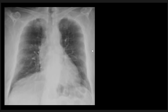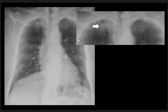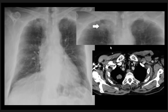Here is another patient where we can see some density in the right apical zone. Comparing that density to the left side, and in the magnified view, this is a mass lesion in that region. The CT scan of this patient confirms the mass lesion, which was proven to be a cancer.